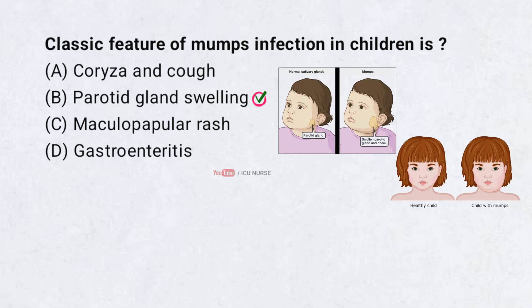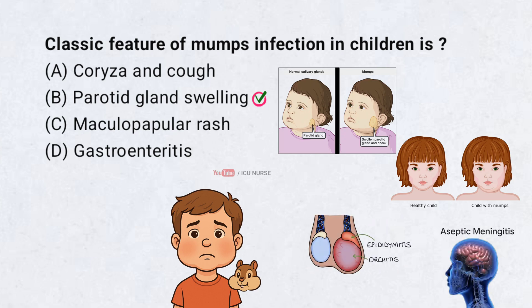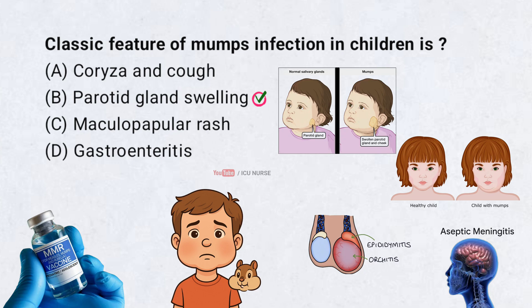Mumps infection is most recognized by painful swelling of the parotid glands, that is, parotitis. This swelling gives a chipmunk cheek appearance. It typically occurs 16 to 18 days after exposure and lasts 7 to 10 days. About 30% of cases may have no swelling. Complications can include orchitis in post-pubertal males or aseptic meningitis. The MMR vaccine has dramatically reduced mumps cases.